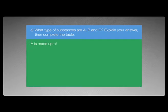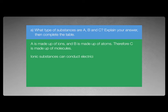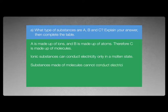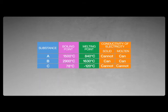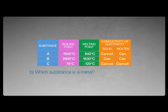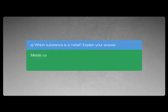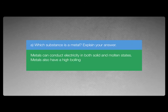Explain your answer. A is made up of ions and B is made up of atoms, therefore C is made up of molecules. Ionic substances can conduct electricity only in a molten state. Substances that are made up of molecules cannot conduct electricity in any state. Substances made up of atoms can conduct electricity in both solid and molten states. Now we can complete this table. Question B: which substance is a metal? Metals can conduct electricity in both solid and molten states, and also have a high boiling point and melting point. So the answer is substance B.